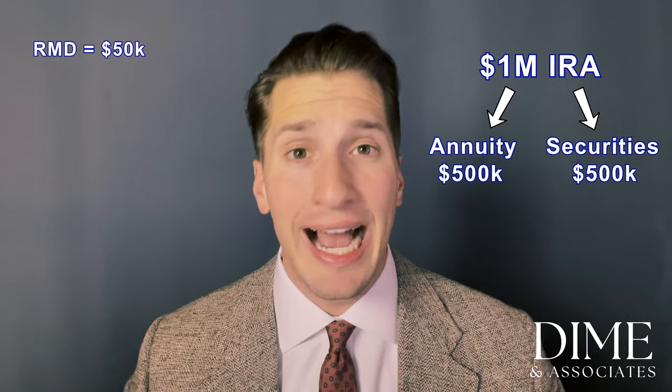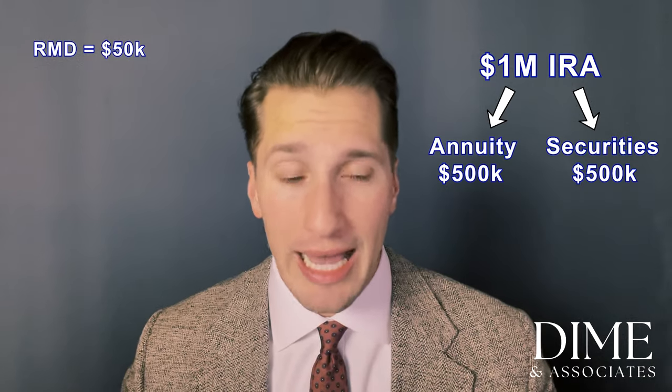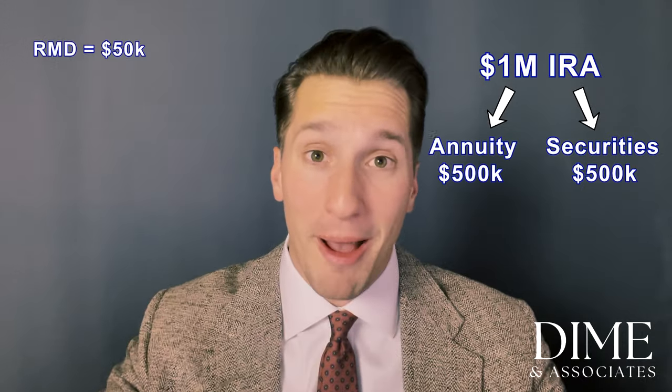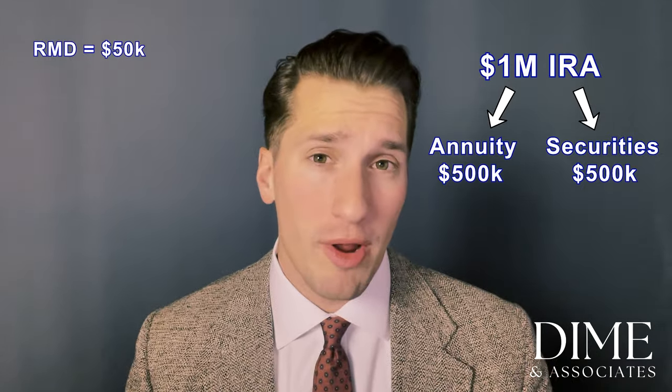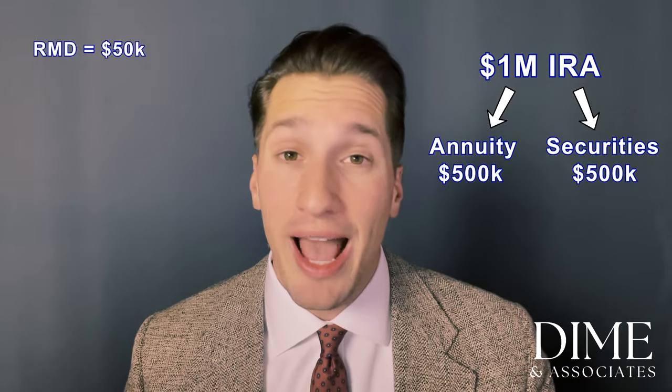For the sake of this video, let's say you're in your mid-70s and you've aged into required minimum distribution territory. At the end of last year, your IRA — which encompasses both an annuity and a portfolio of stocks, bonds, and mutual funds — is worth a total of one million dollars. Let's say $500,000 of that total IRA is in the annuity and $500,000 is in an index fund portfolio. After doing the math, your required minimum distribution for this year is $50,000. If the entire IRA was simply a collection of index funds, the math is simple: by December 31st, you'd just need to pull out $50,000. But in this example, half of your IRA is in the form of an annuity — so how does that factor in?